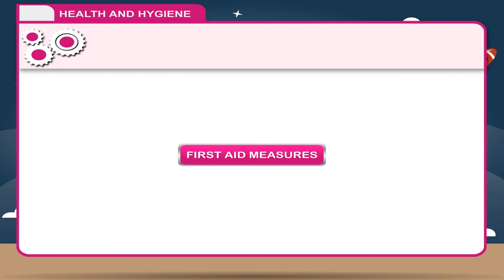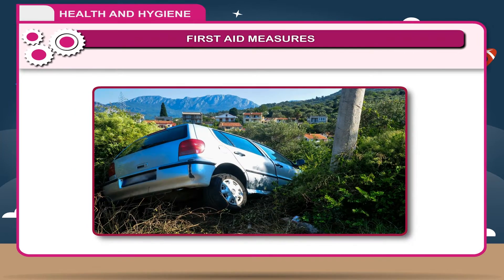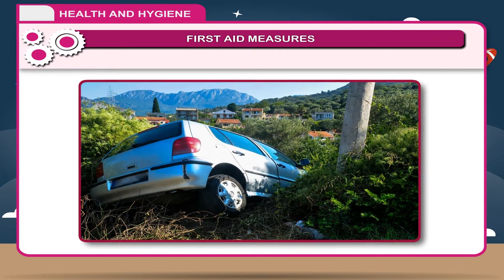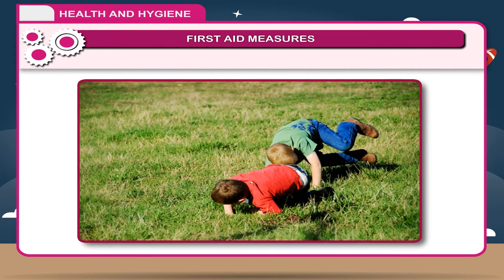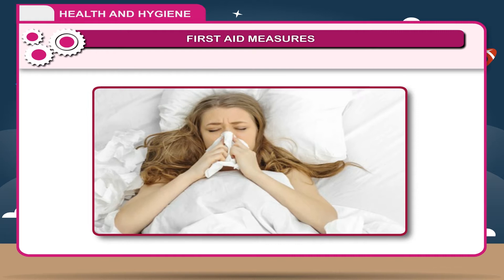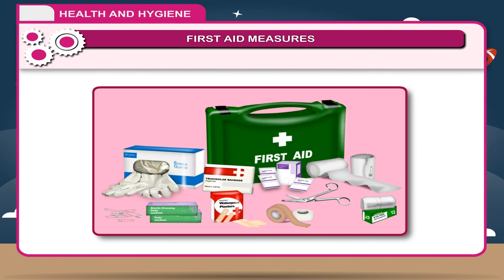First Aid Measures. Most of the times we follow safety rules. Even then, sometimes accidents and mishappenings can take place. Children, while playing, may fall down and get injured. In your home, any family member may fall sick. In such an emergency, care for a victim of sudden illness or injury is called first aid.